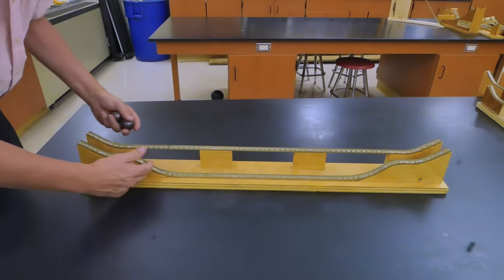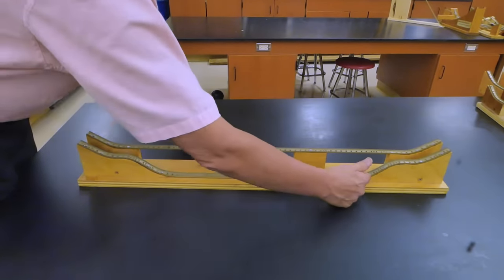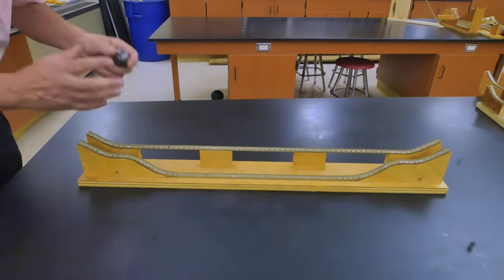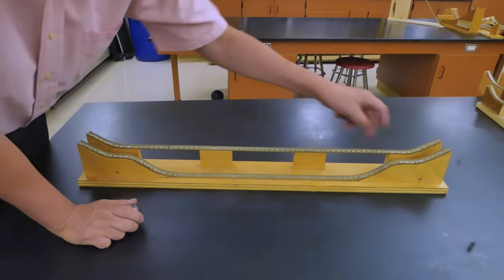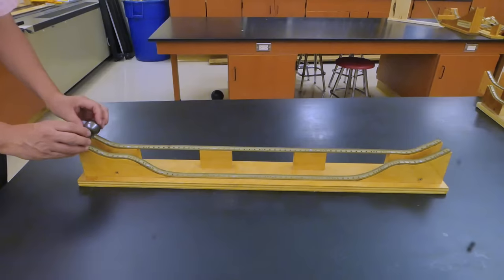Whereas this track drops down to a lower level, covers a lot of distance, and then finally comes back up again at the very end. So the question is, which track would get a ball over to the opposite side the quickest? Well, I have two steel balls here, let's give it a try.